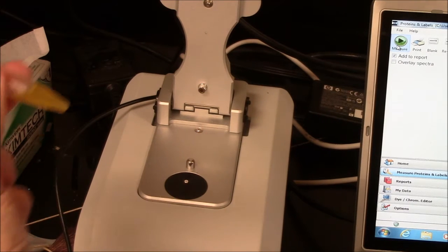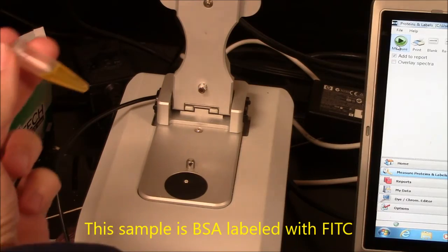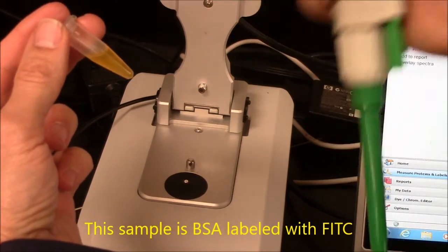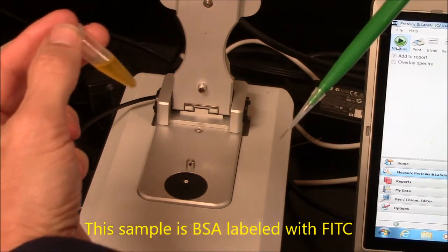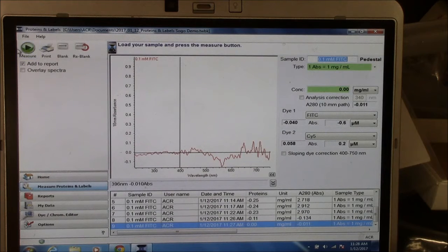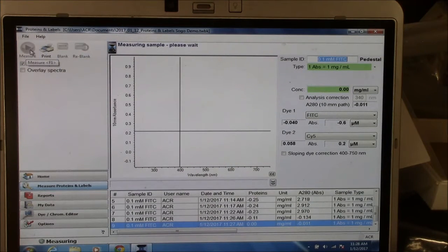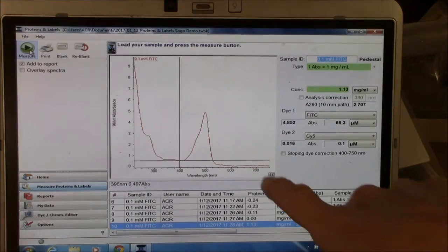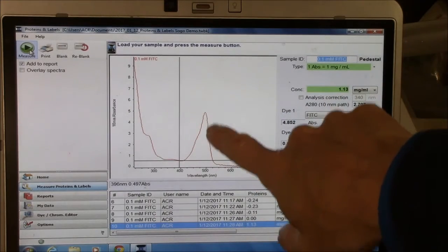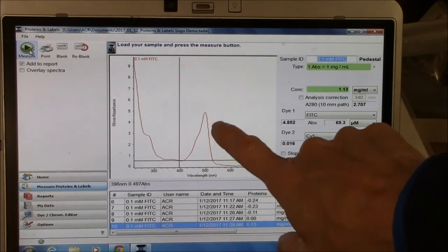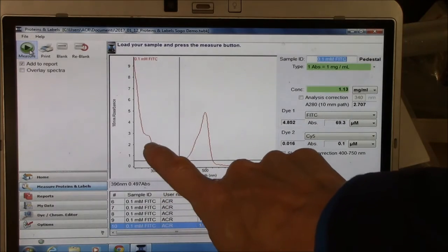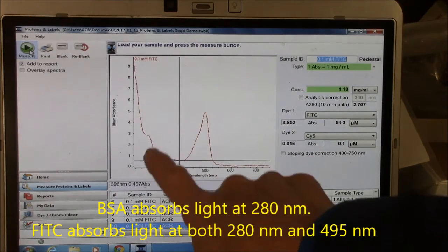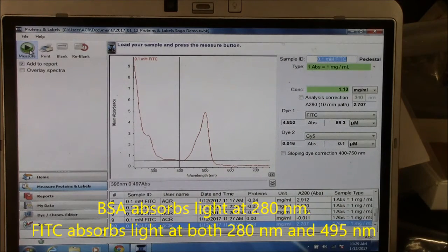Now, I've got a fraction here of labeled protein, so it's labeled with FITC. I'm going to take the spectrum of that. I've loaded the labeled protein. I'll press measure. And I get a spectrum that has this peak here due to the dye, the fluorescein, and it has a peak here that's due to protein and dye.